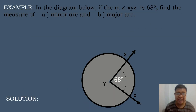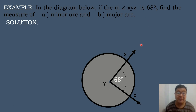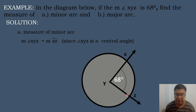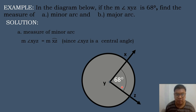Let's have an example. In the diagram below, if the measure of angle XYZ is equal to 68 degrees, find the measure of the minor arc and the major arc. Let's solve first for the minor arc. The measure of the central angle equals its intercepted arc, so the intercepted arc of angle XYZ is arc XZ, which is a minor arc because it measures less than 180 degrees. Therefore, arc XZ equals 68 degrees.